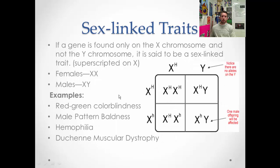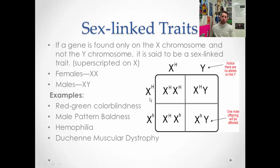Finally, sex-linked traits. If a gene is found only on the X chromosome and not on the Y, it's said to be sex-linked. We use superscripts placed on the X because the gene is on the X chromosome. Sex-linked traits affect females and males differently because sex chromosomes differ — males are XY, females are XX. Examples include red-green colorblindness, male pattern baldness, and hemophilia.